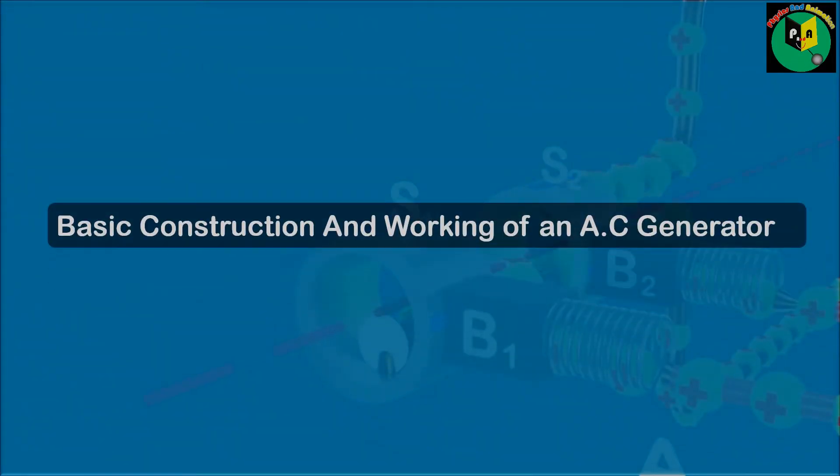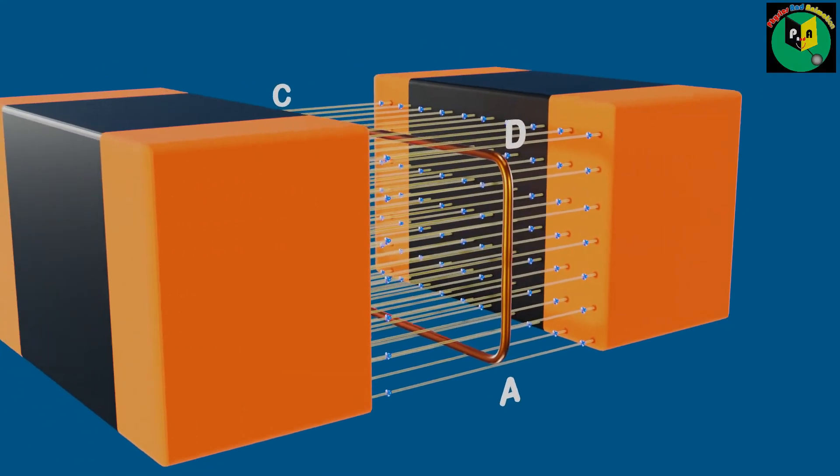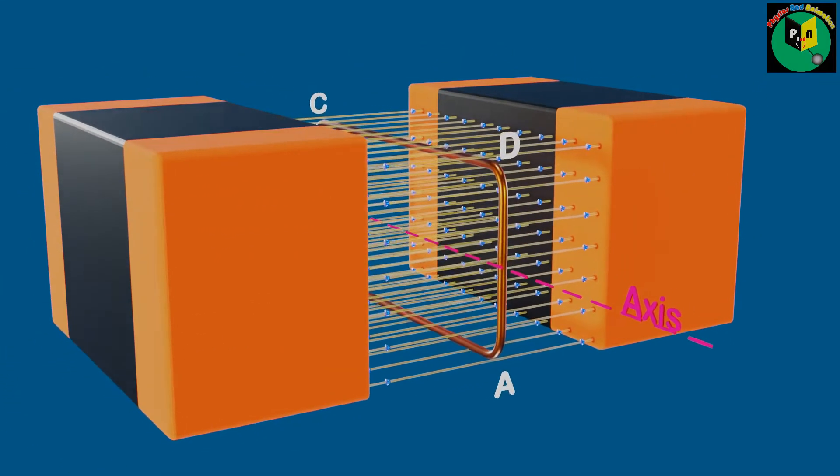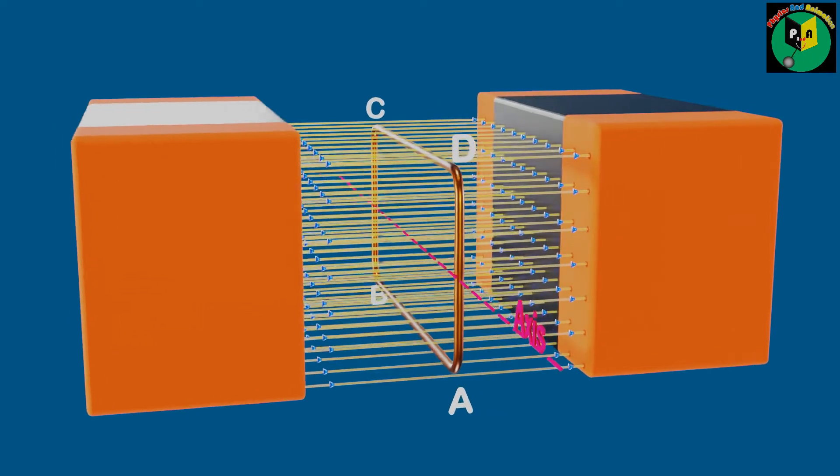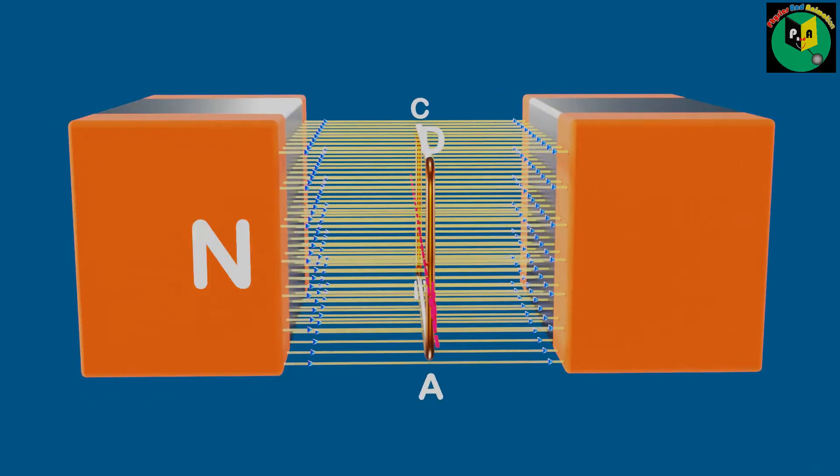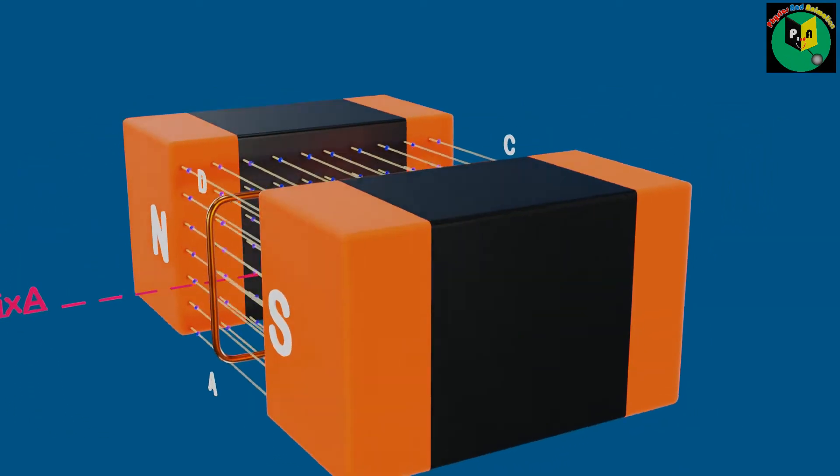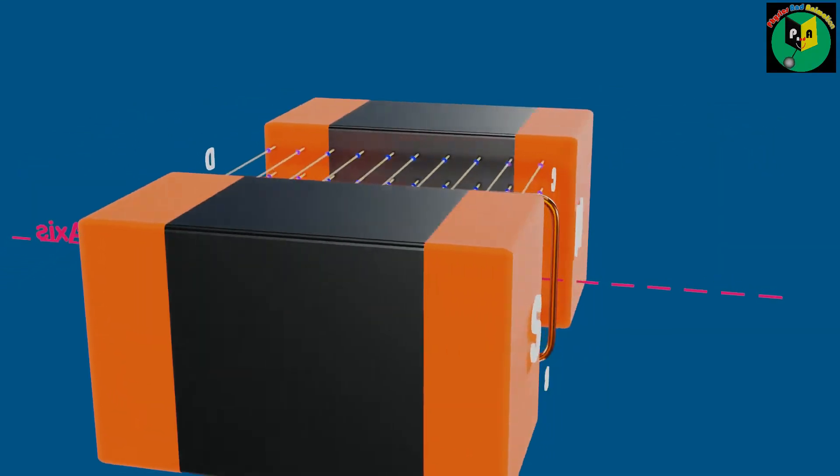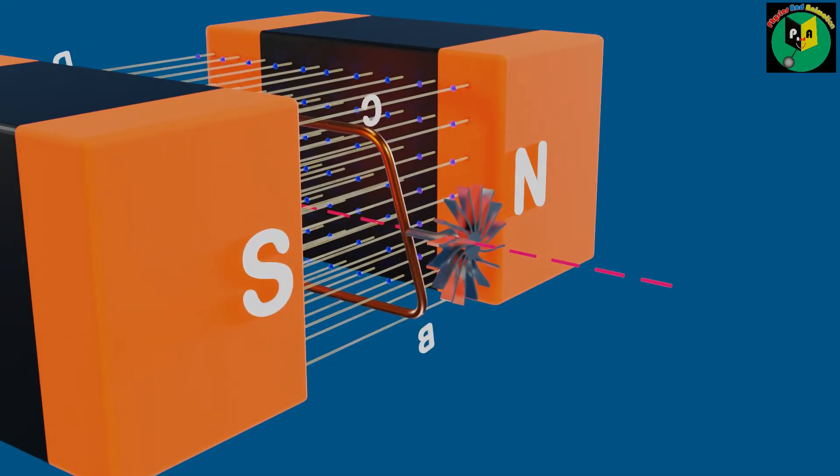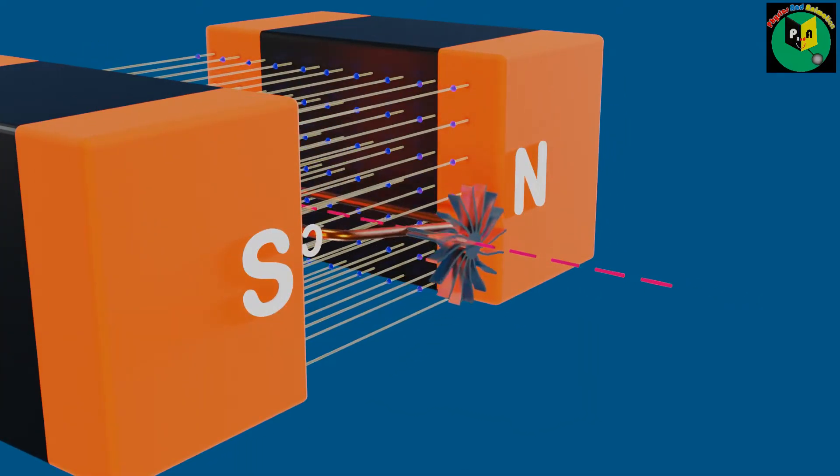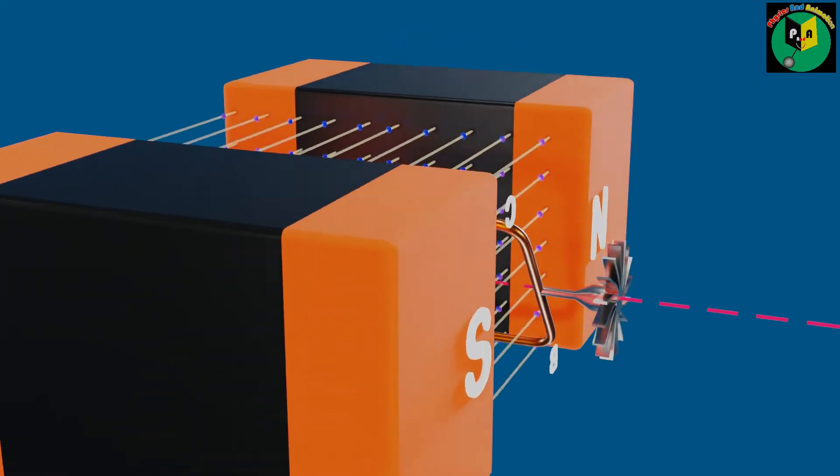Let's start with basic construction and working of an AC generator. First, let's consider a rectangular loop of the coil ABCD kept in a magnetic field and free to rotate about its axis. The direction of a magnetic field is from the north pole to the south pole. When we rotate it with the help of any external means, the magnetic flux passing through the rectangular loop of the coil changes.